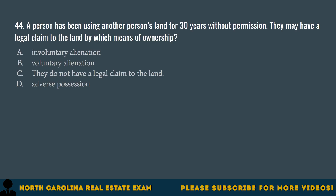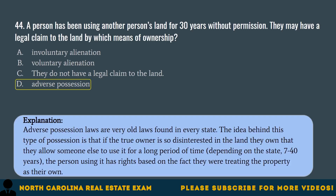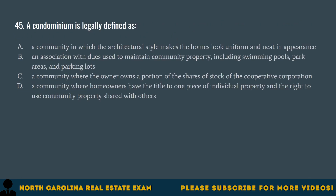Question 44. A person has been using another person's land for 30 years without permission. They may have a legal claim to the land by which means of ownership? A. Involuntary alienation. B. Voluntary alienation. C. They do not have a legal claim to the land. D. Adverse possession. The correct answer is D. Adverse possession. Adverse possession laws are very old laws found in every state. The idea is that if the true owner is so disinterested in the land they own that they allow someone else to use it for a long period of time — depending on the state, 7 to 40 years — the person using it has rights based on the fact they were treating the property as their own.